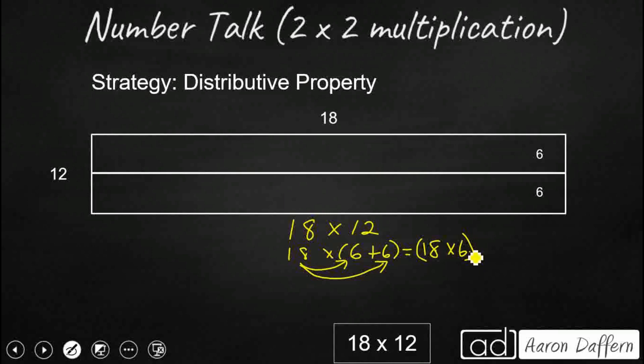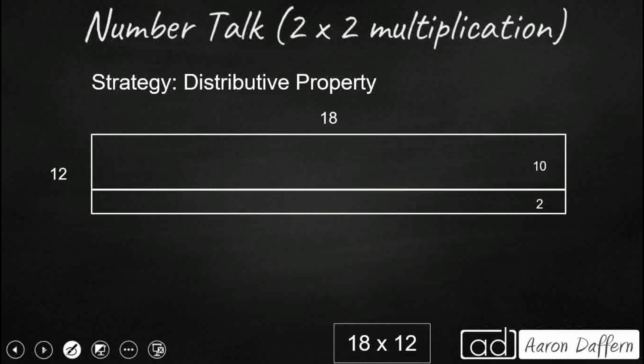So let's see, 18 times 6. 8 times 6 is 48. 10 times 6 is 60. So 48 and 60, that's going to be 108. And we're going to do the same thing for the other one. So we still have to do a little bit of mental math to figure out 18 times 6. But that's a little bit easier. Add those two together and guess what we get? 216. That's not changing.